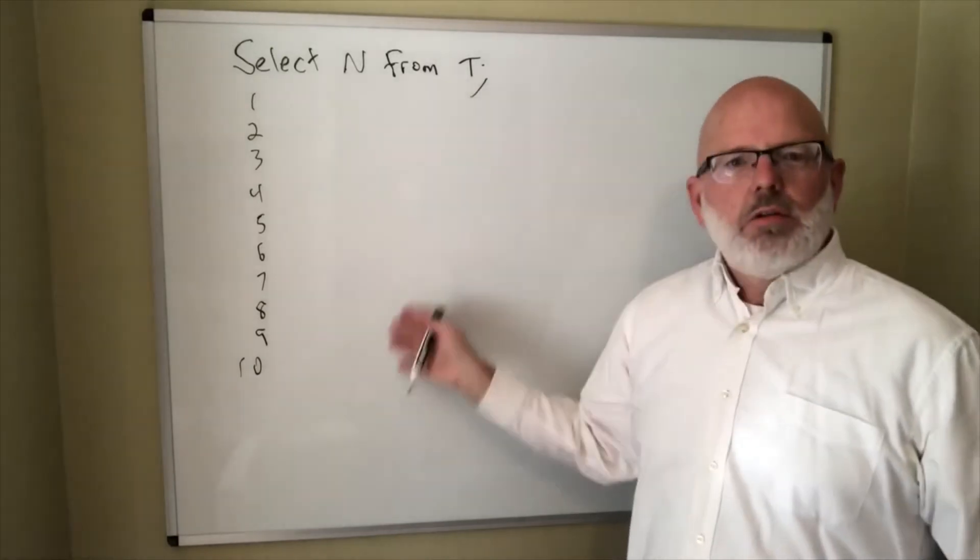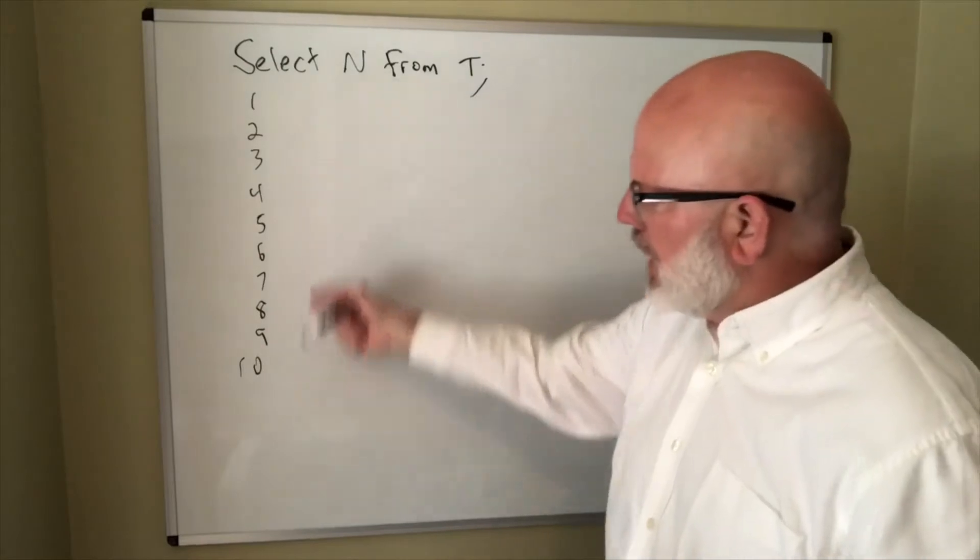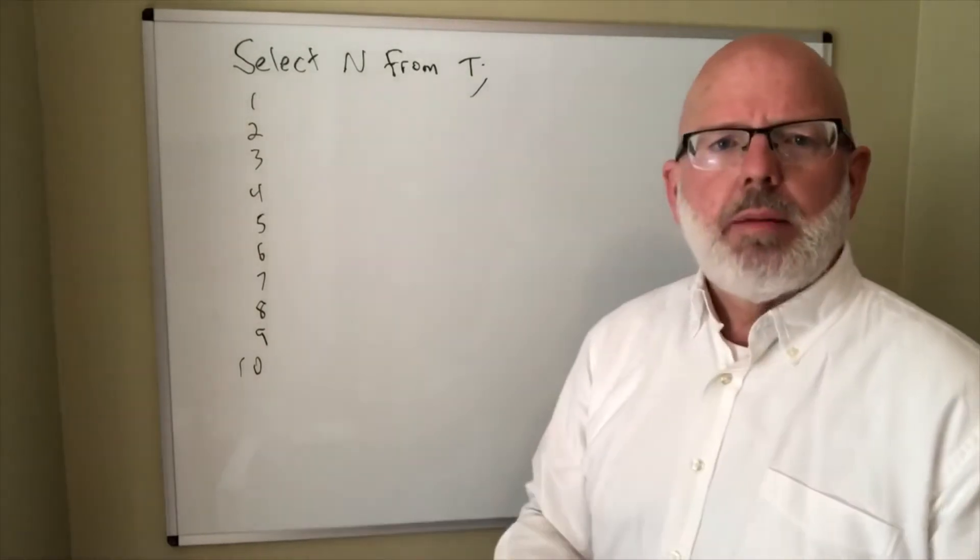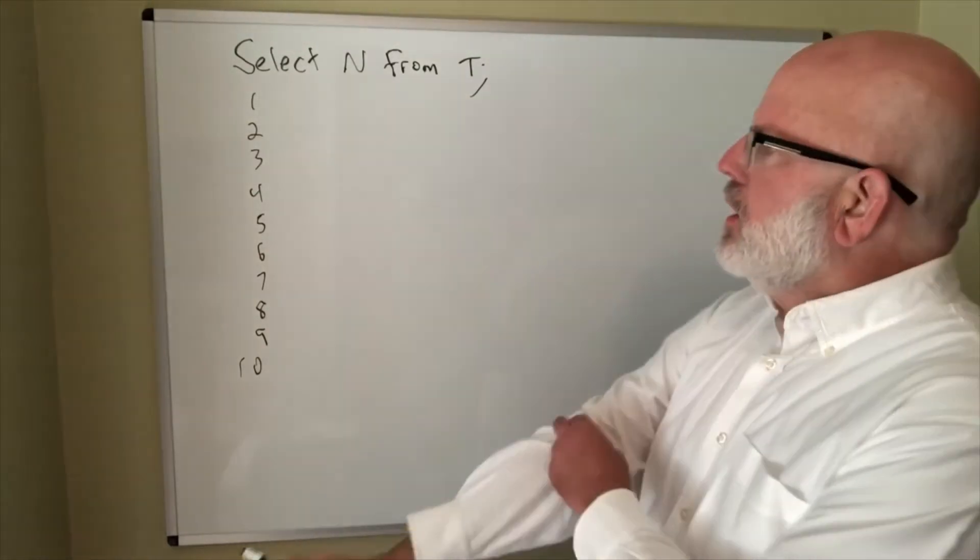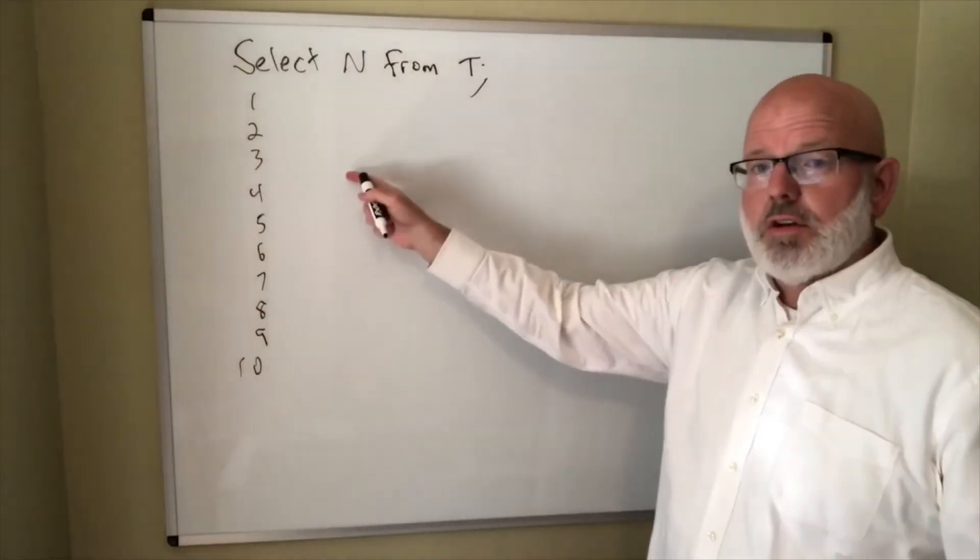This is a useful thing to have in case I might want to join it with other things. If I can have a list of 10 numbers, it might make my joins work better. So I'm going to use recursive SQL to do this.